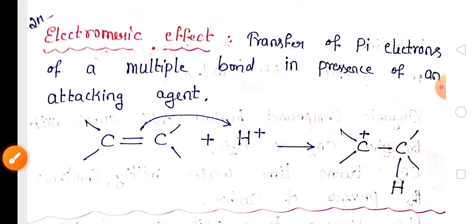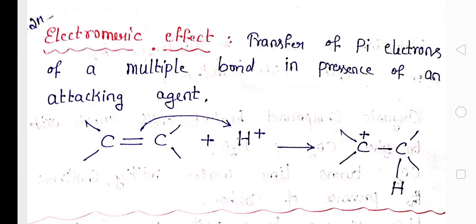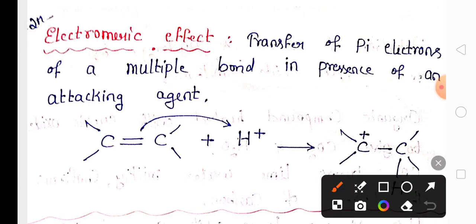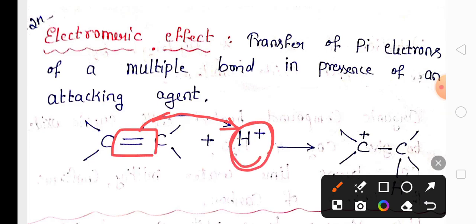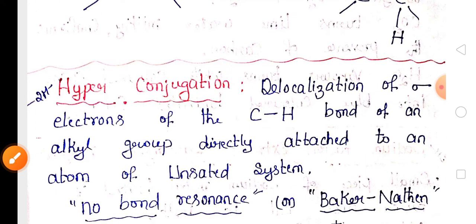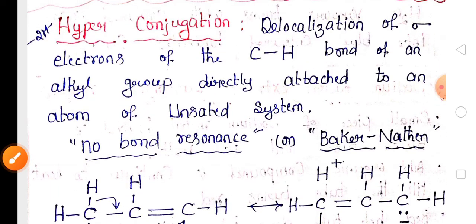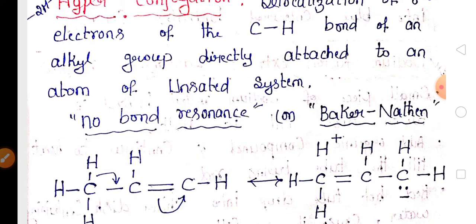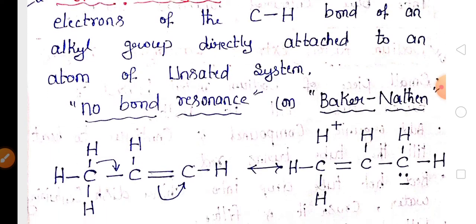The electromeric effect is also very important. It is a transfer of pi electrons of a multiple bond in the presence of an attacking reagent. Hyperconjugation definition is also very important — it is a delocalization of sigma electrons of a carbon-hydrogen bond directly attached to the atom of an unsaturated system.